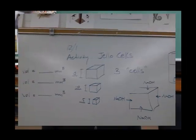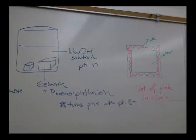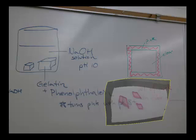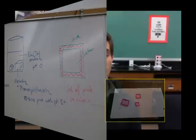Remember, every cube that you cut out of the gelatin represented a cell, and we had cells of different sizes, or cubes of different sizes. We put those cubes in the sodium hydroxide solution, and when the sodium hydroxide solution diffused into those cells, it turned the phenolphthalein on the inside of that gelatin pink.